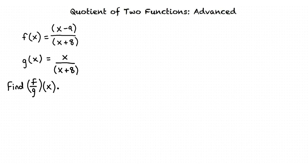What does quotient mean? Quotient is defined as the result obtained by dividing one quantity by another. When finding the quotient of two functions, we need to take one function divided by the other function.